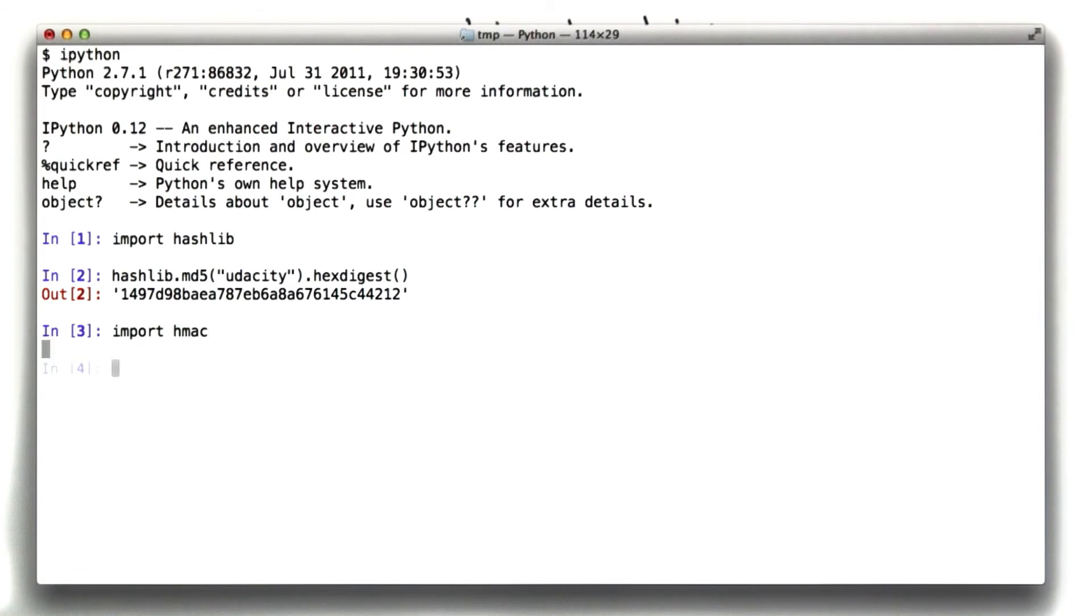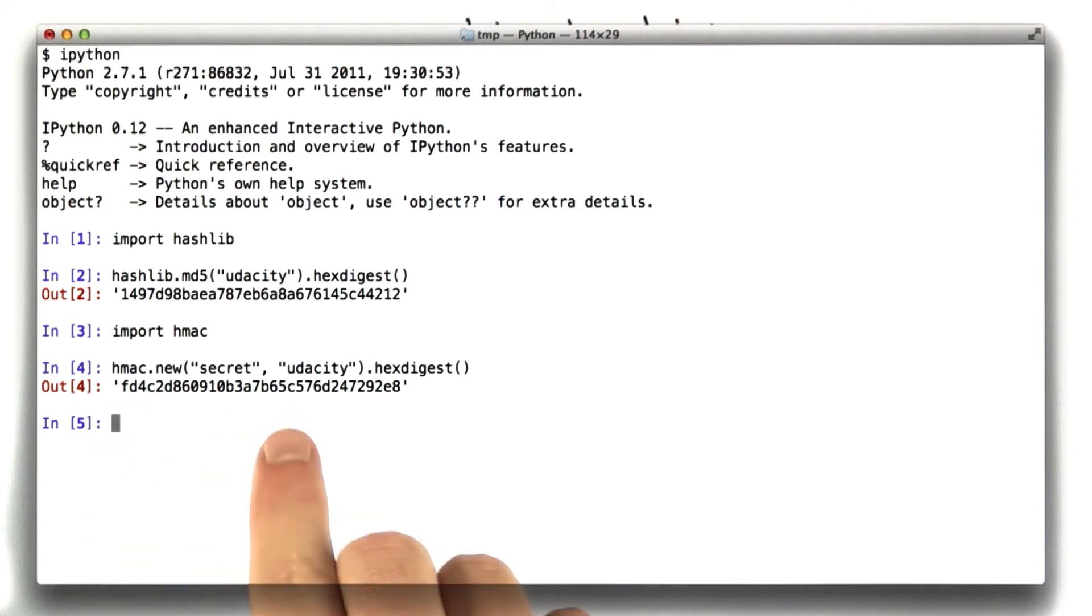We can use the HMAC library to accomplish something similar, but HMAC takes an extra parameter for a secret and combines it securely. We could say HMAC.new, and we give it a secret, and we give it Udacity. We say hex digest, and we get a similar output except this is more secure.